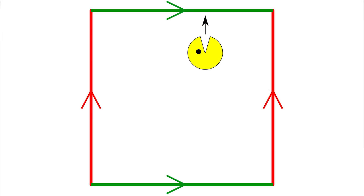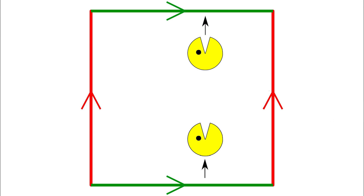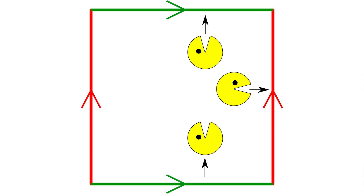Pac-Man is accustomed to finding things he's dropped without ever turning around. Because when Pac-Man goes up through the top of his screen, he comes in through the bottom. When he goes out through the right, he comes in through the left.